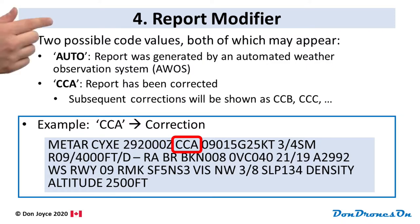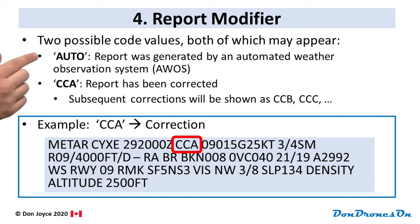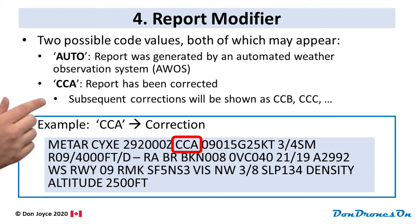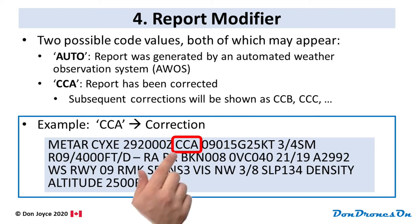Group 4 is the report modifier, and it has only two possible code values. The first is AUTO, meaning the report was generated by an automated weather observation system, called an AWOS — and most METARs are in fact generated automatically. The second possible value is CCA, indicating the report has been corrected. If corrected more than once, subsequent corrections are shown as CCB, CCC, and so on. In this case, we do have a corrected report because it says CCA.